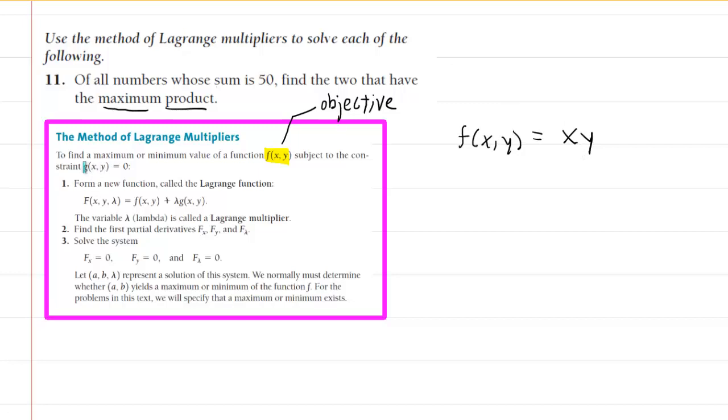Next, we need to come up with g of xy, and that's going to be associated with what I like to call a constraint. The constraint will always be associated with the number that's given in the question. In this case, the number is 50, and we can see that our two mystery numbers have to sum to 50. This would mean, of course, that x plus y would have to equal 50.